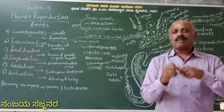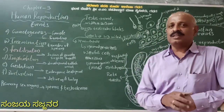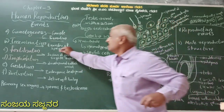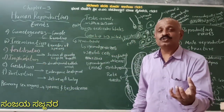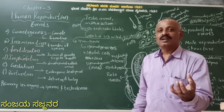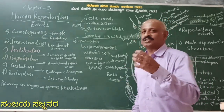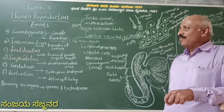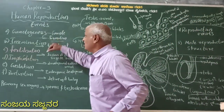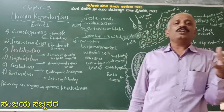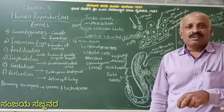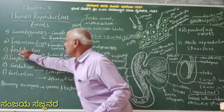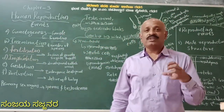After the formation of the gametes, especially the male gametes are transferred to the female part. The female part — transferred into the reproductive region. It is called insemination — transferring the sperm into the reproductive canal. And we move on to the next: fertilization.